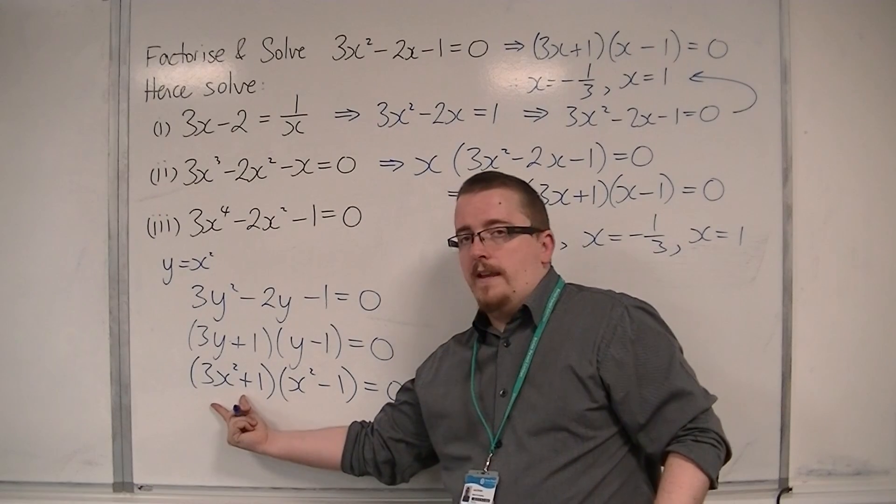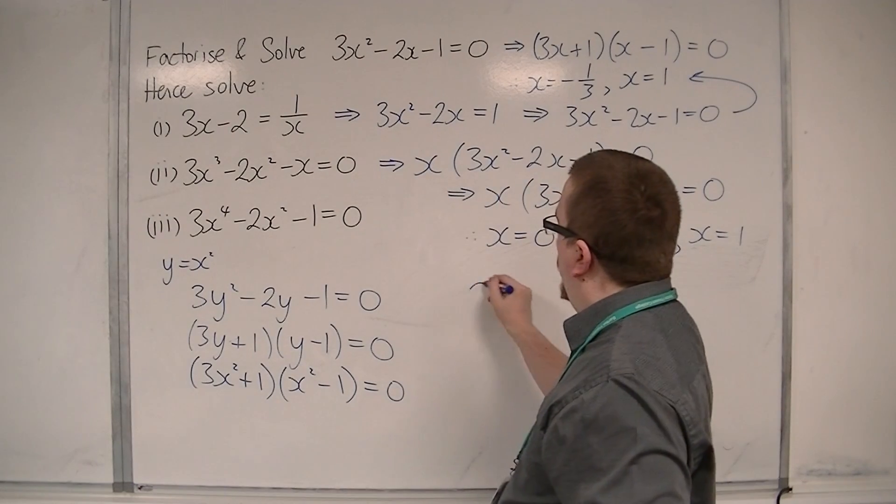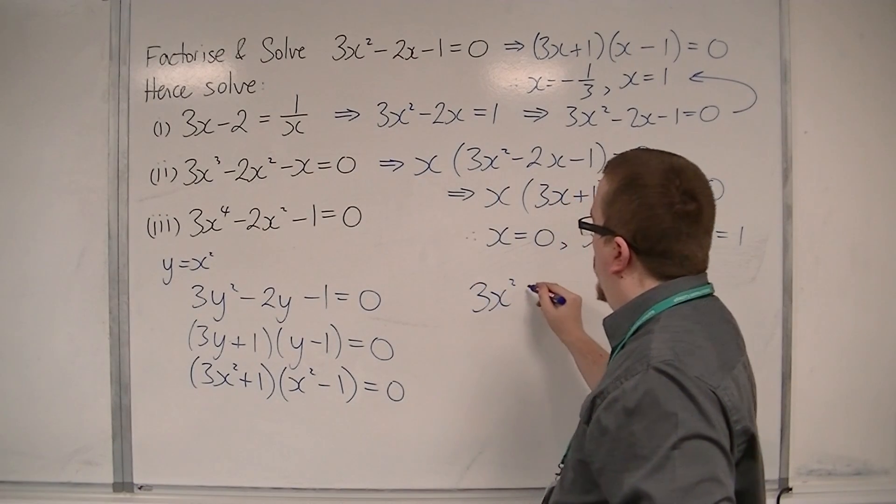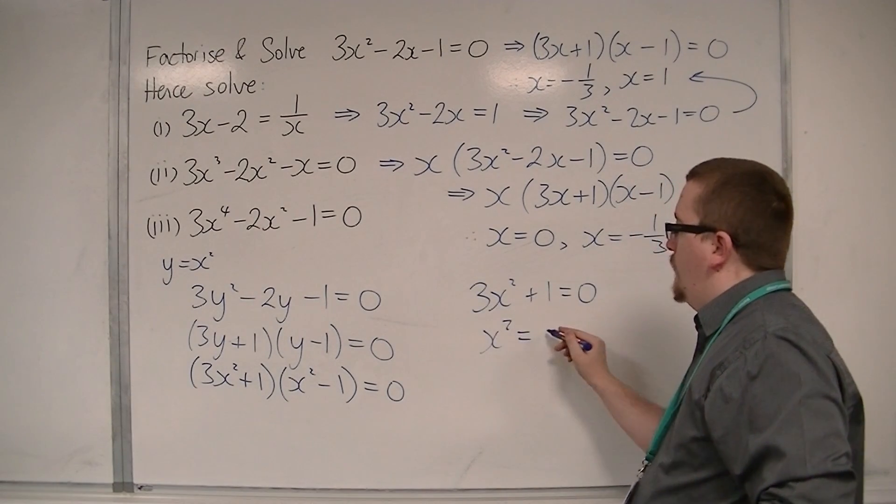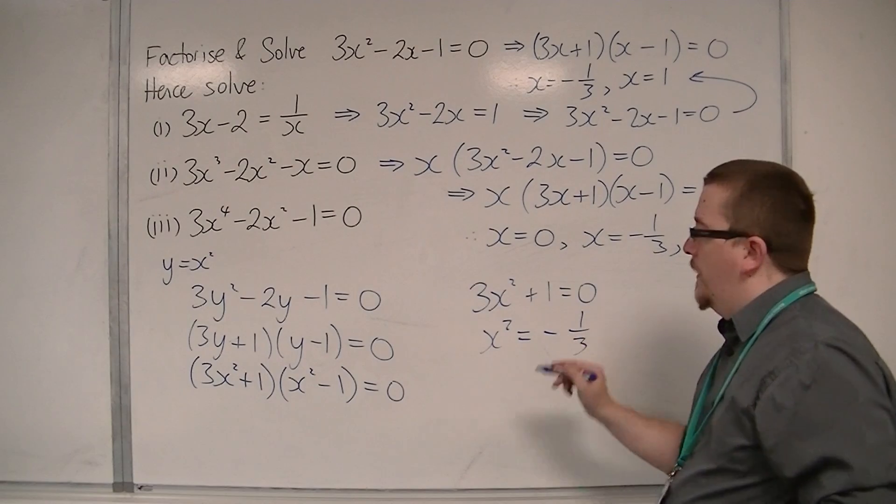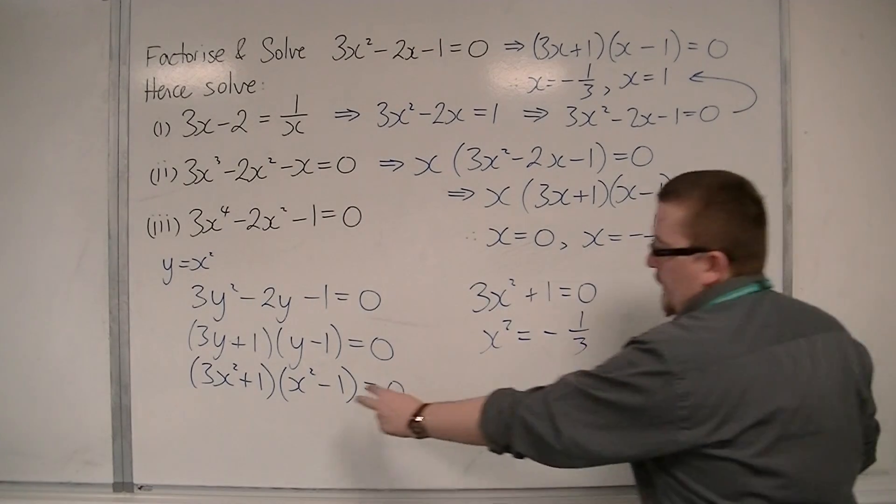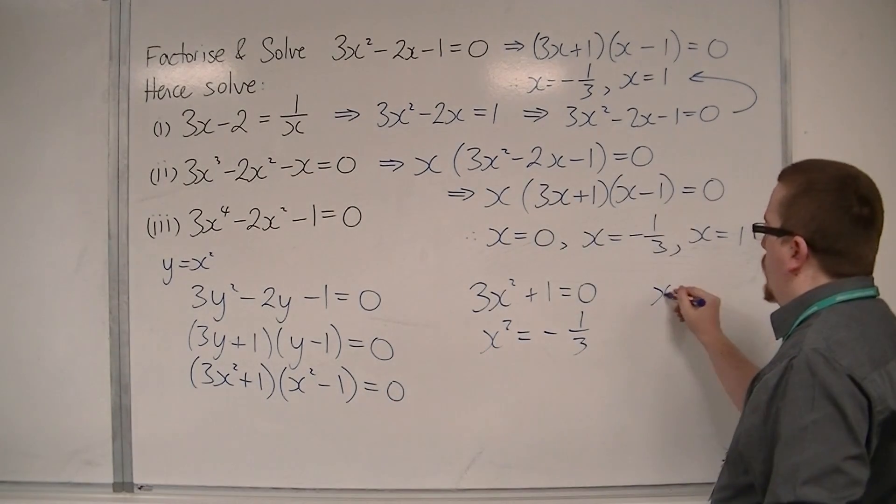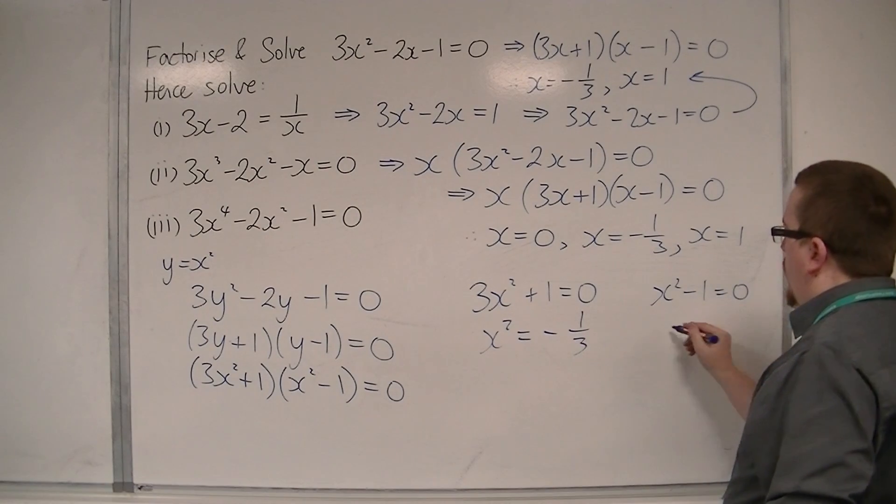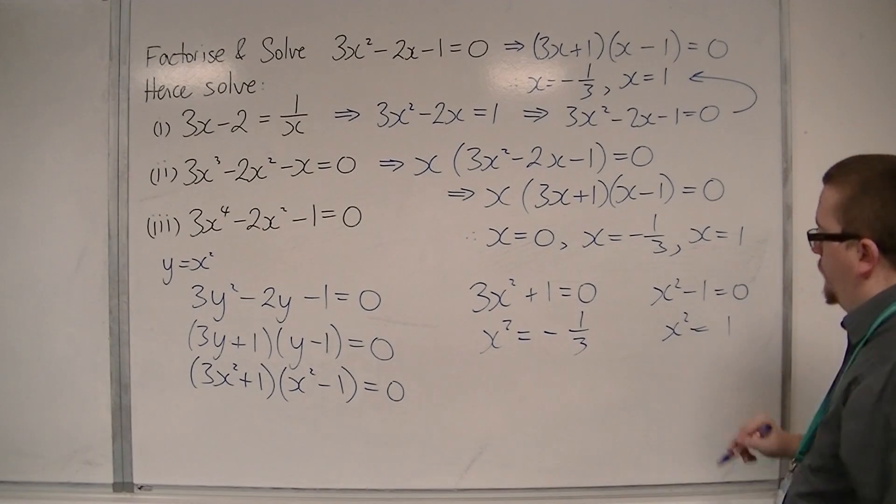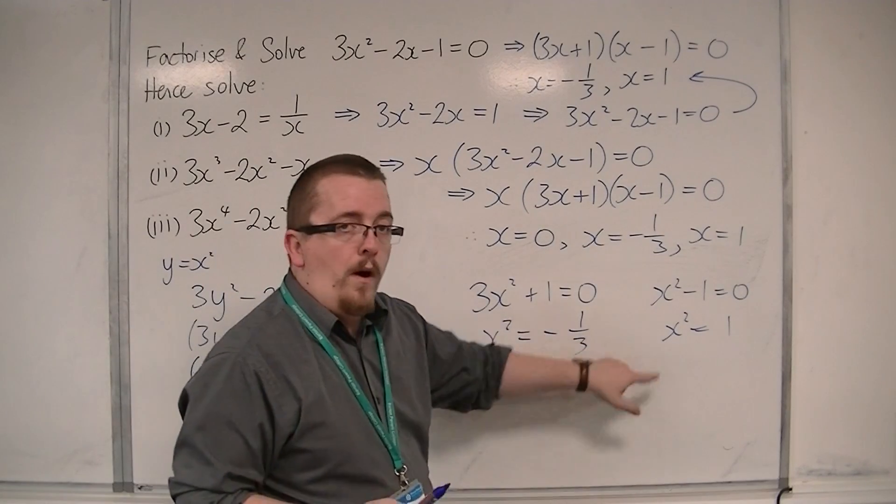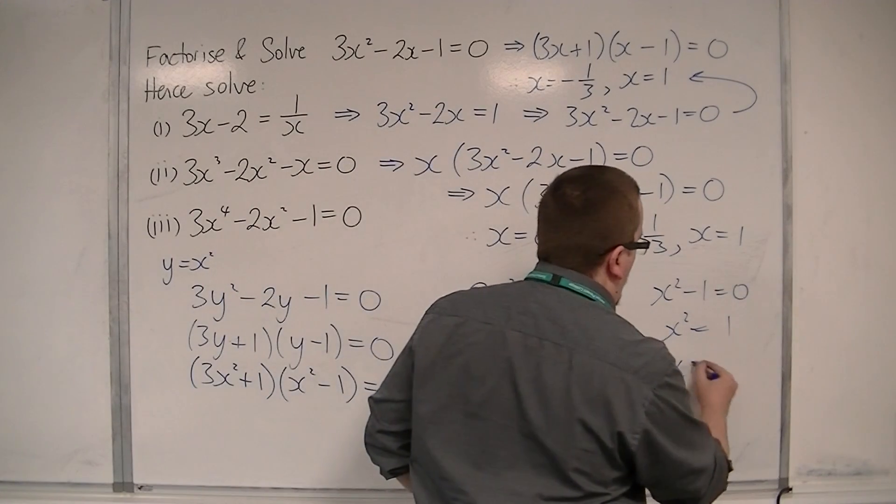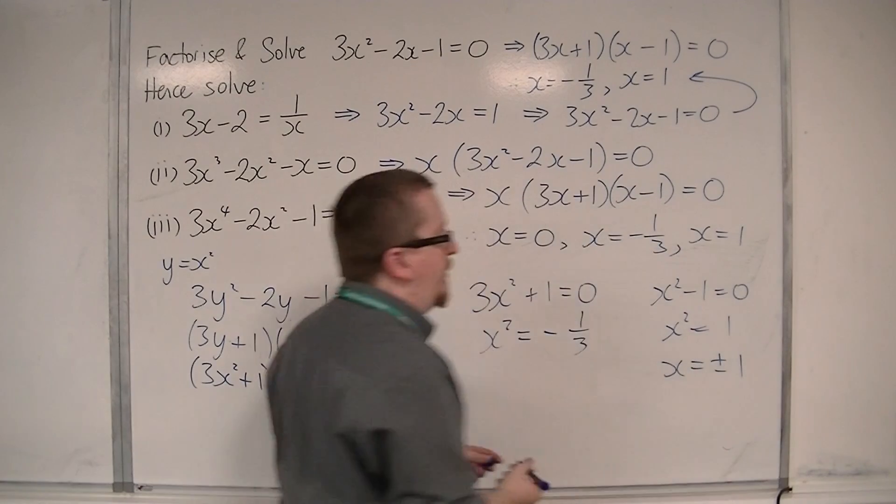Either this bracket is 0, in which case 3x squared plus 1 is 0, in which case x squared would have to be minus 1 third, or, the x squared minus 1 is 0, in which case x squared would have to be 1. If x squared is 1, then x must be plus or minus 1, square rooting the 1.